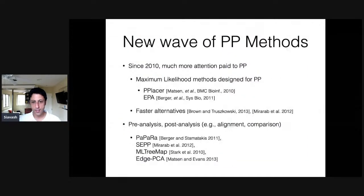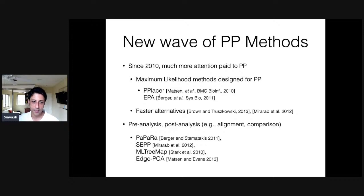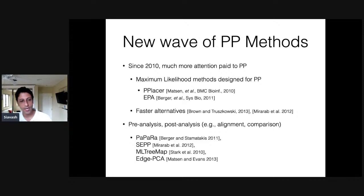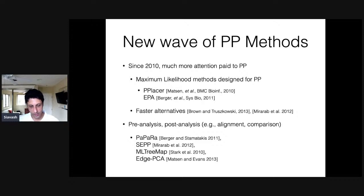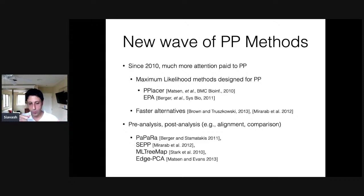Since around 2010, there has been a lot of method development for placement, really pioneered by Eric Madsen's group and also Alexei's group. Two methods came out — PPLACER and EPA — that do maximum likelihood placement, finding the place on the tree with the best likelihood. Both were very effective and inspired further work: people developed faster methods and alternatives, as well as tools for pre-processing and post-processing of placement results such as alignment and tree comparison.